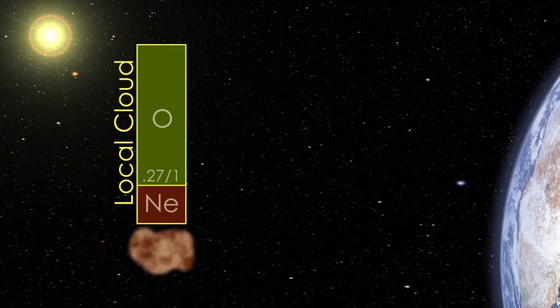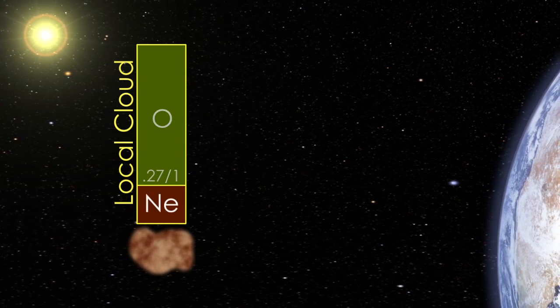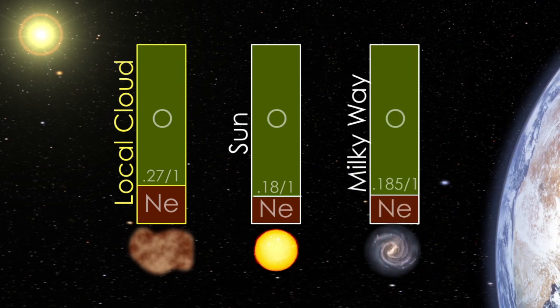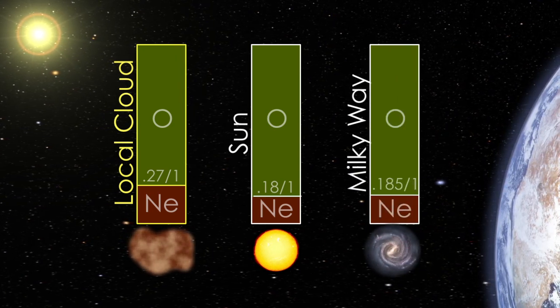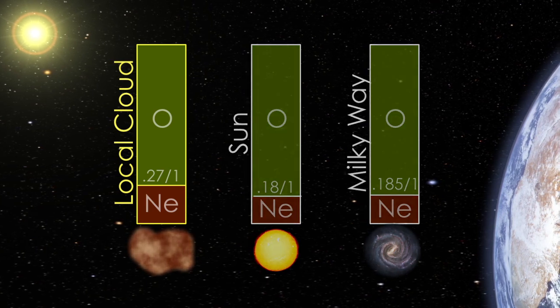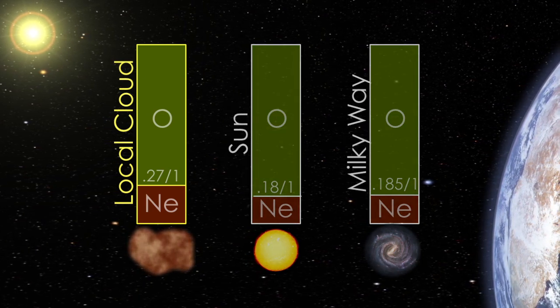The IBEX measurements of heavy interstellar atoms, oxygen and neon, show a difference from the solar system and galaxy as a whole. This puzzle may mean that the sun has moved out of the region where it formed, or that some of the oxygen has been captured by dust in interstellar space.